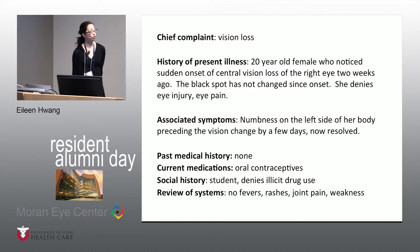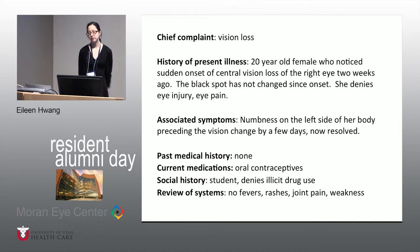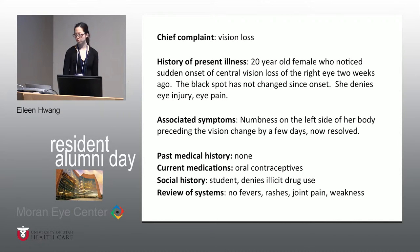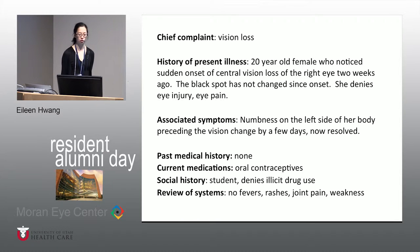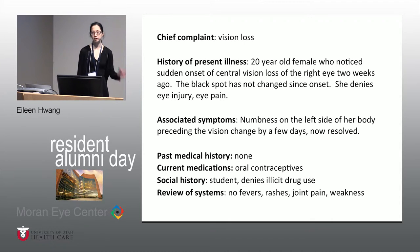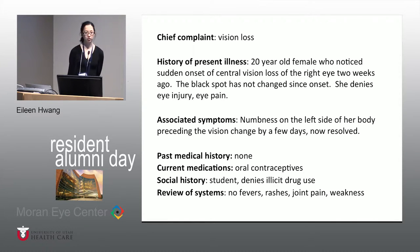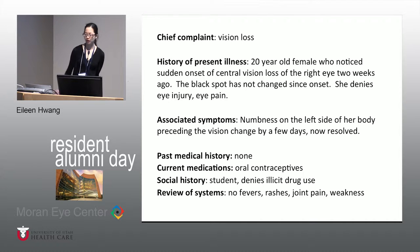The patient was a 20-year-old female. She said that two weeks prior to seeing us, she had sudden onset of central vision loss in her right eye — a black spot in her vision. It didn't change, move, or grow since it came on. She didn't have any eye pain, hadn't injured her eye. She also mentioned some numbness on the left side of her body that started a few days before the vision changed, but that had gone away. She had no medical history; her only medication was an oral contraceptive, and she was a university student who did not use drugs.